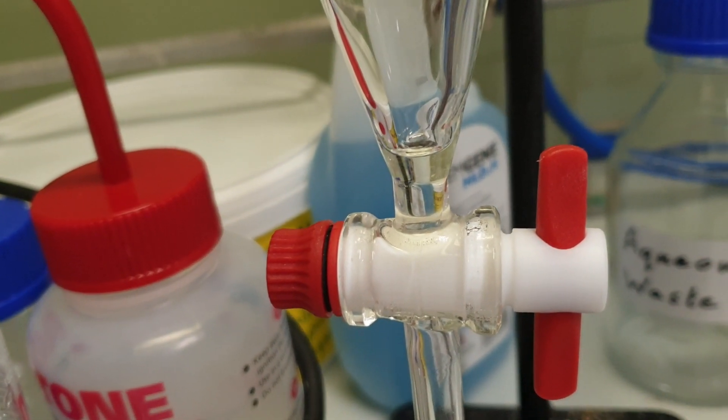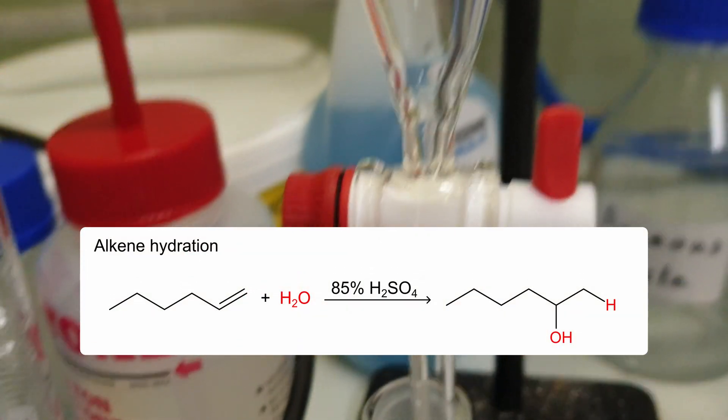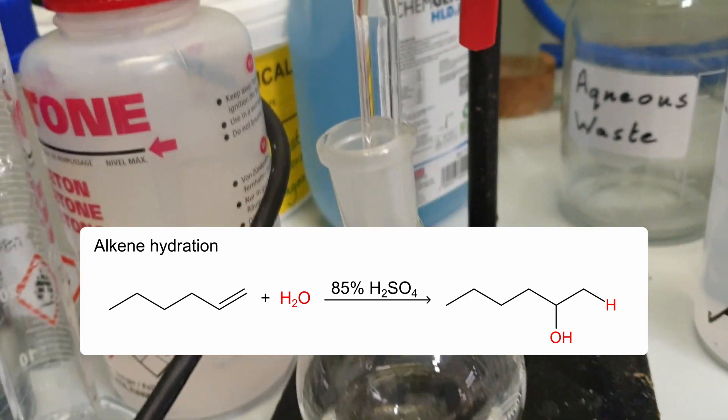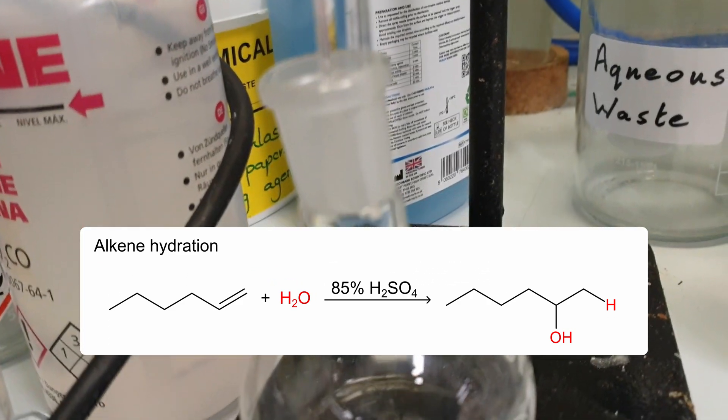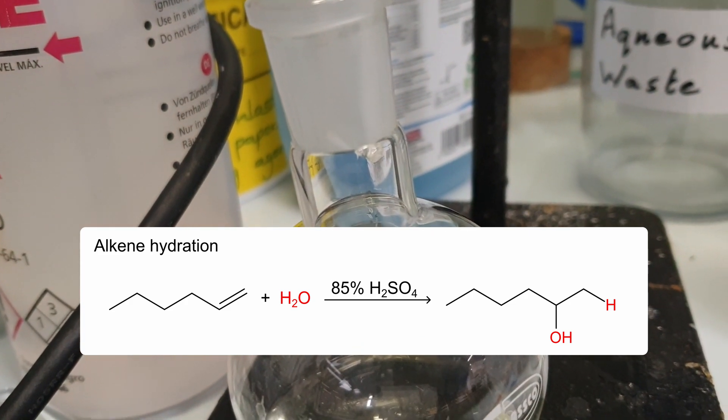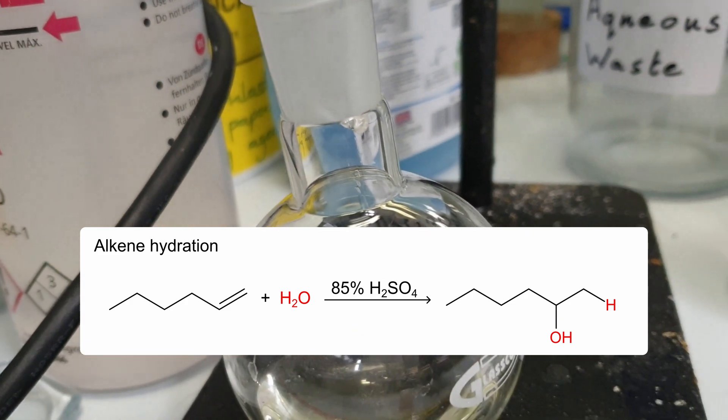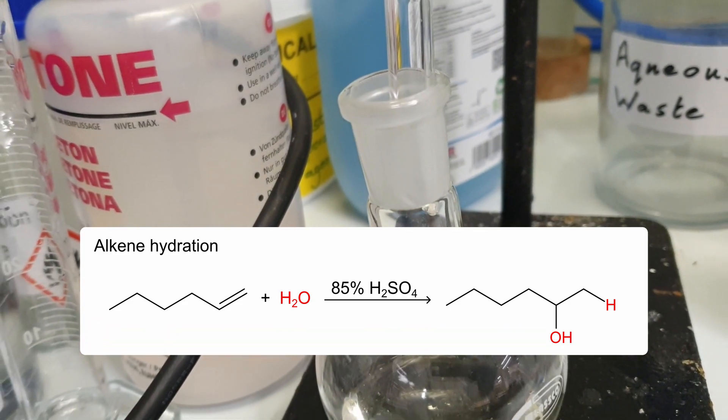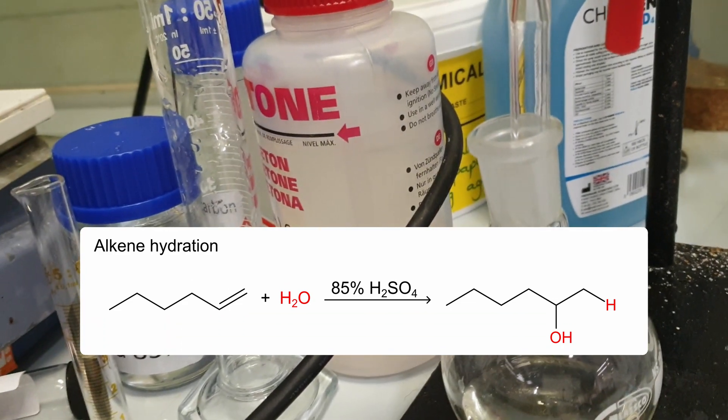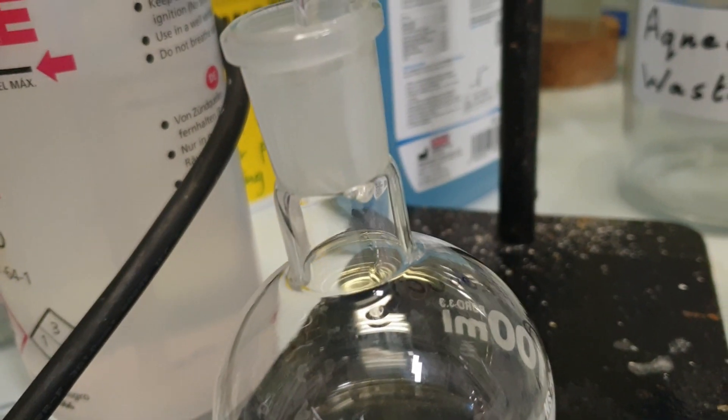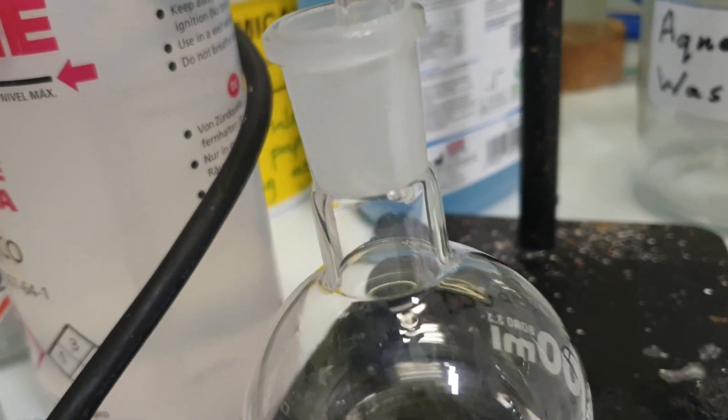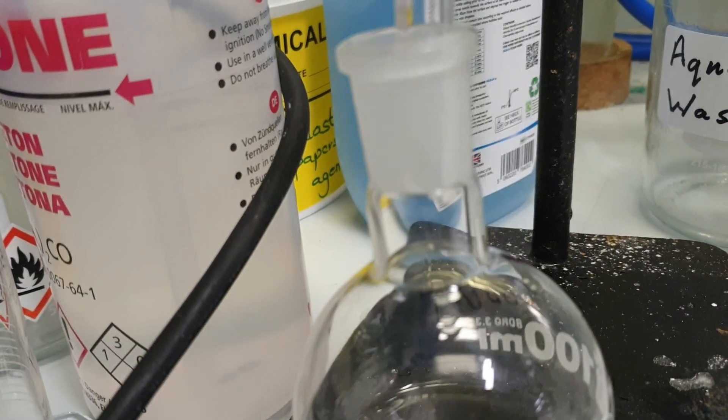You might be wondering what reaction am I carrying out? Well it's in the title of the video. It's alkene hydration, adding water to an alkene functional group or a double bond. Two hydrogens and one oxygen literally adds on to where the alkene functional group was. This reaction mixture contains concentrated sulfuric acid and hexene.